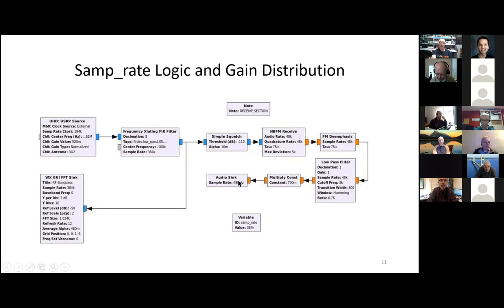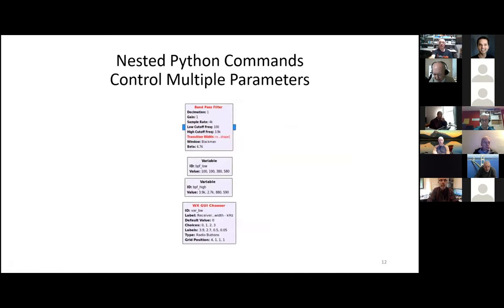You could have used 44.1 or even 32 kilohertz. 32 is good because you tend to want a sample rate that is basically 10 times the data rate of your audio — so 3,000 times 10 is roughly 32,000. But in this case I chose 48. Nested Python commands allow you to control multiple parameters.